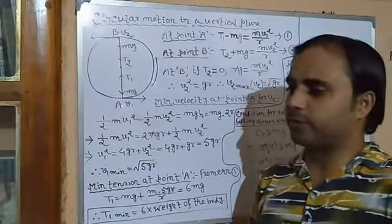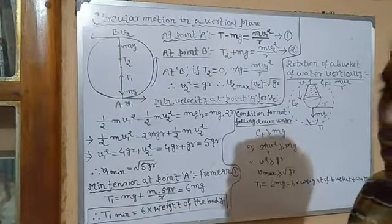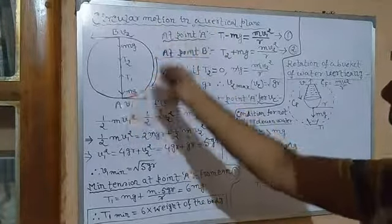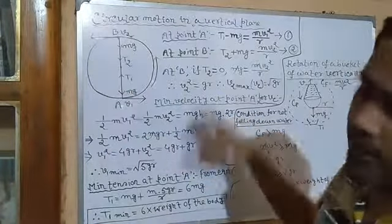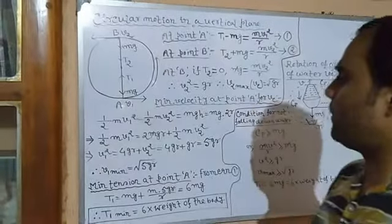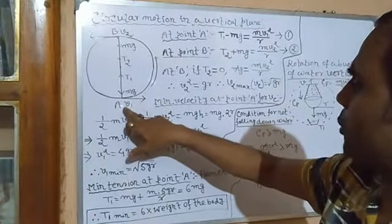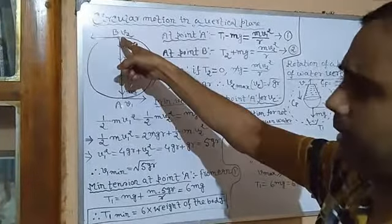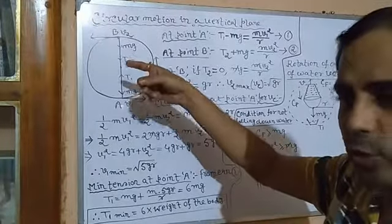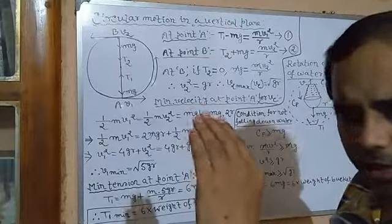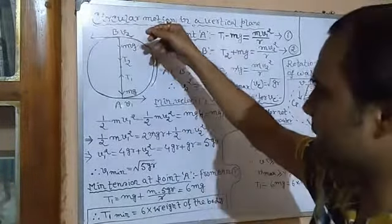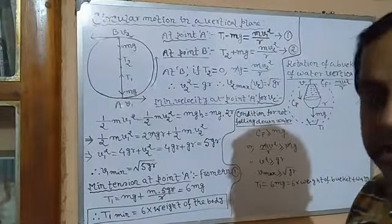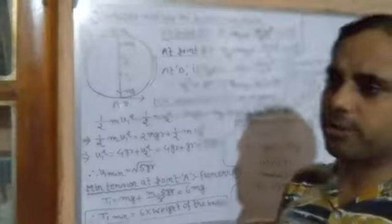We will find out expressions for the velocity and the tension of the string. Suppose a stone of mass m is rotating in the vertical plane in an anti-clockwise direction — the result will be the same for clockwise. When the stone is at the bottom and we rotate it, as it reaches the top at point B, its velocity decreases slightly and the string becomes slightly loose, meaning tension decreases. When it comes back from top to bottom, velocity increases and tension also increases.